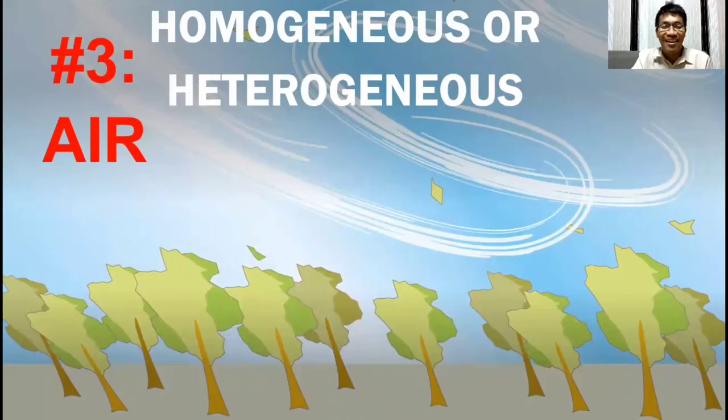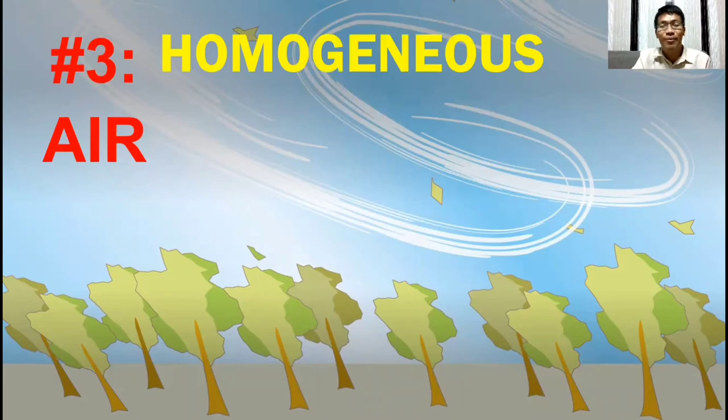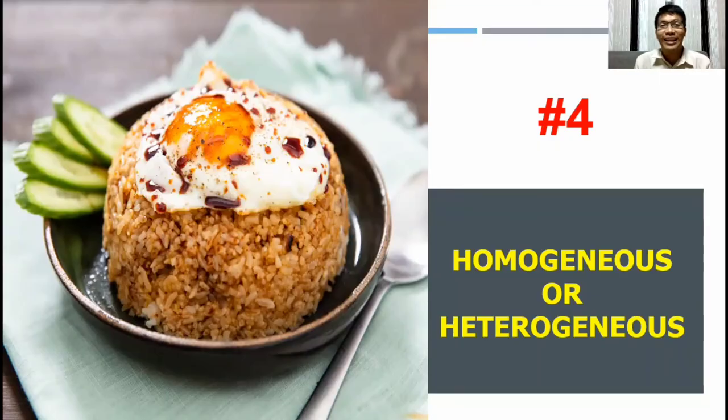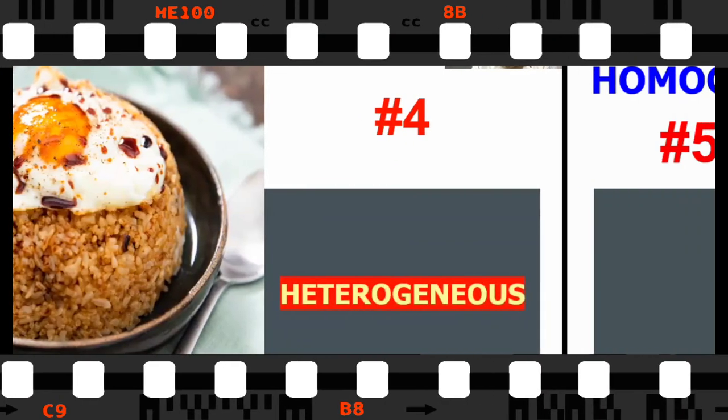Third is the air. Is it homogenous or heterogenous? The answer is, tadaan, homogenous. Fourth example is, tadaan, this meal. And this is classified as heterogenous.